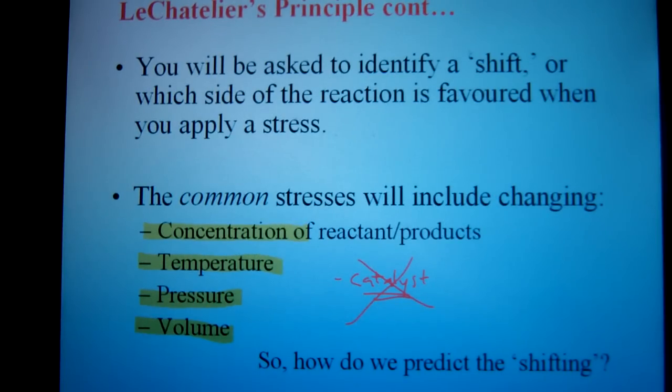The different stresses that you're going to see are the change in concentration of something, or increase or decrease in temperature, or pressure or volume. What you won't see as a regular stress is catalyst. You may be asked about it, but catalysts don't do anything to the equilibrium. All they do is get you to your equilibrium system faster, increase the forward and reverse reaction rates, but they actually don't change the equilibrium at all.